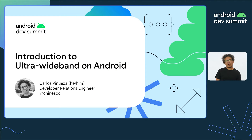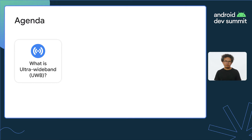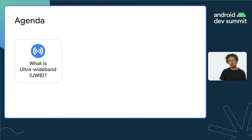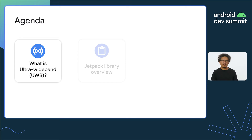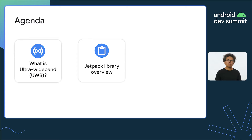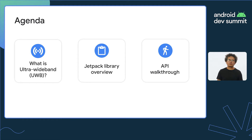Hi, I'm Carlos Vinuesa from the Android Developer Relations Team, and I'm here to talk to you about Ultra Wide Band. In this session, we will see an introduction to Ultra Wide Band technology and real-life examples on how it can be used, then an overview of our new Jetpack library for building apps with UWB, and finally a walkthrough of some code to see how to use it.